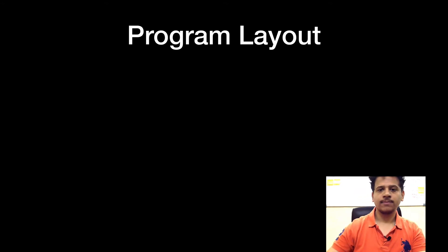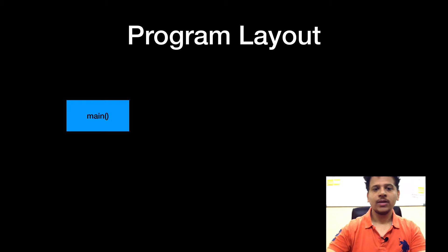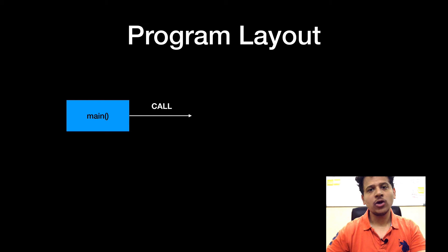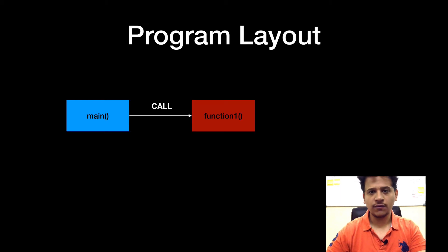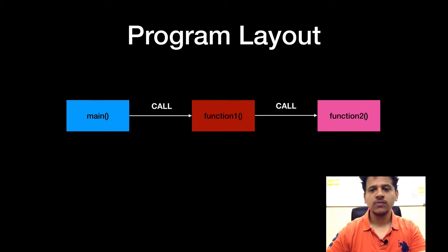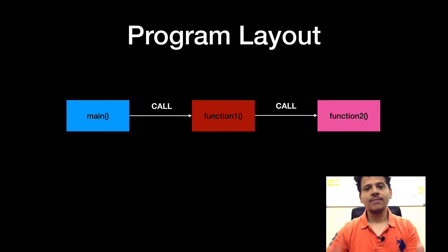First, we will look at the program layout. In this, we will start execution from main. Main calls function 1 and function 1 calls function 2. So this is our program layout.